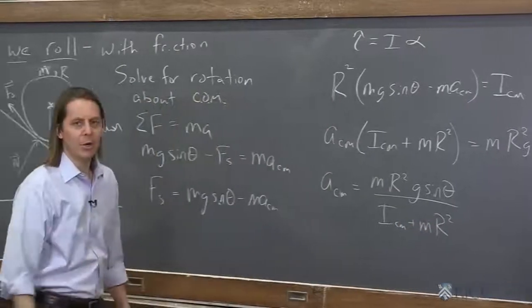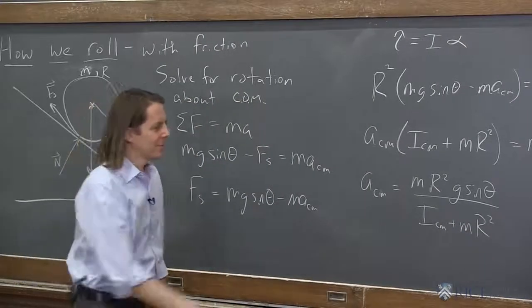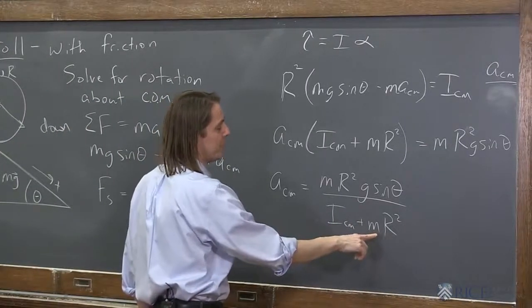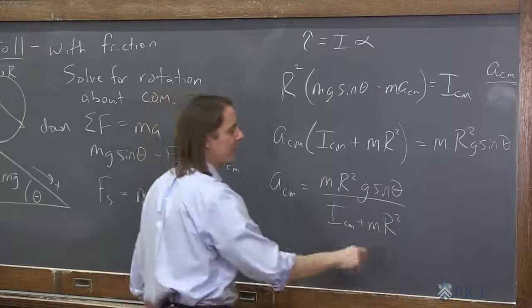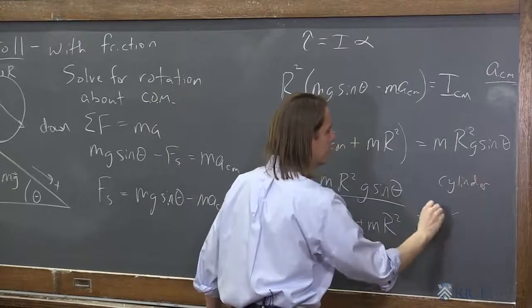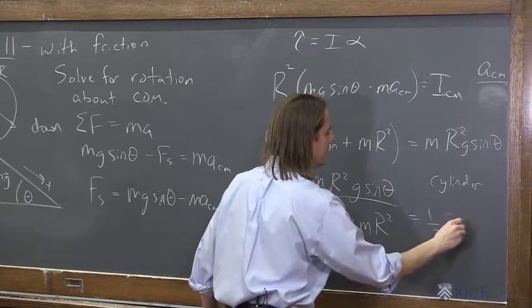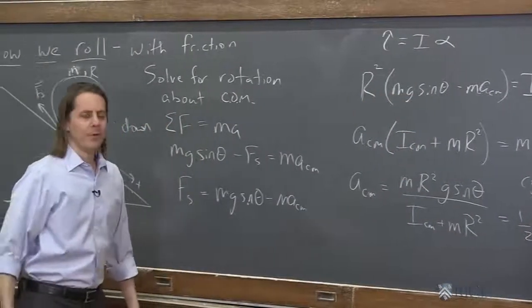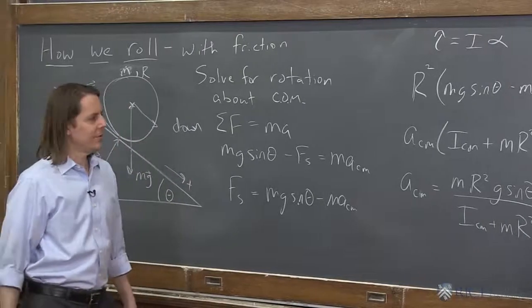And you see, this is exactly what we got before. Remember, so if this is a cylinder, this becomes mr^2, mr^2 plus mr^2 is 2mr^2. The mr^2s go away. So for a cylinder, a solid cylinder, it's one-half g sin theta. And for a sphere, it's five-sevenths g sin theta, et cetera, et cetera, et cetera.